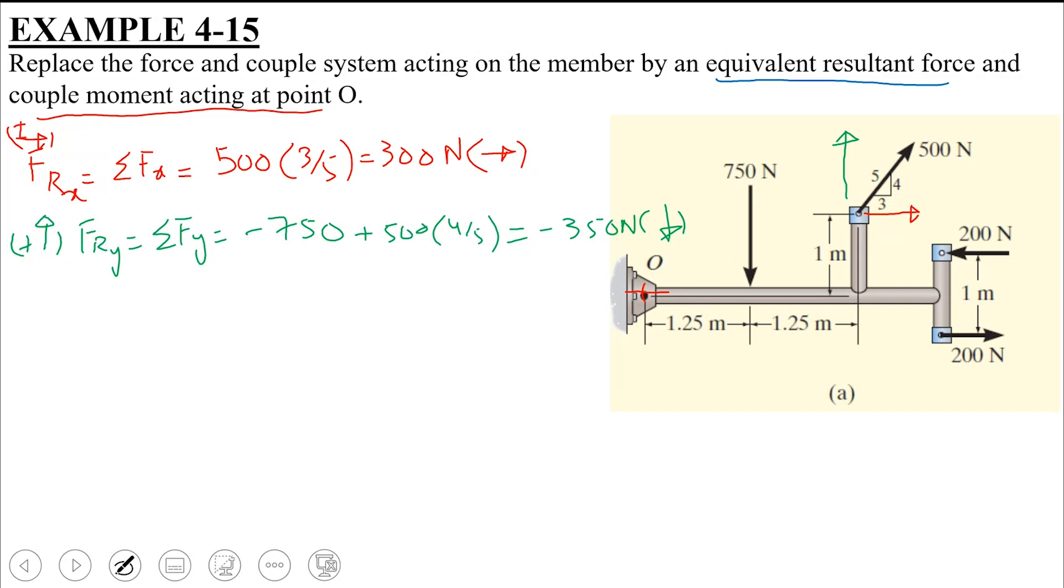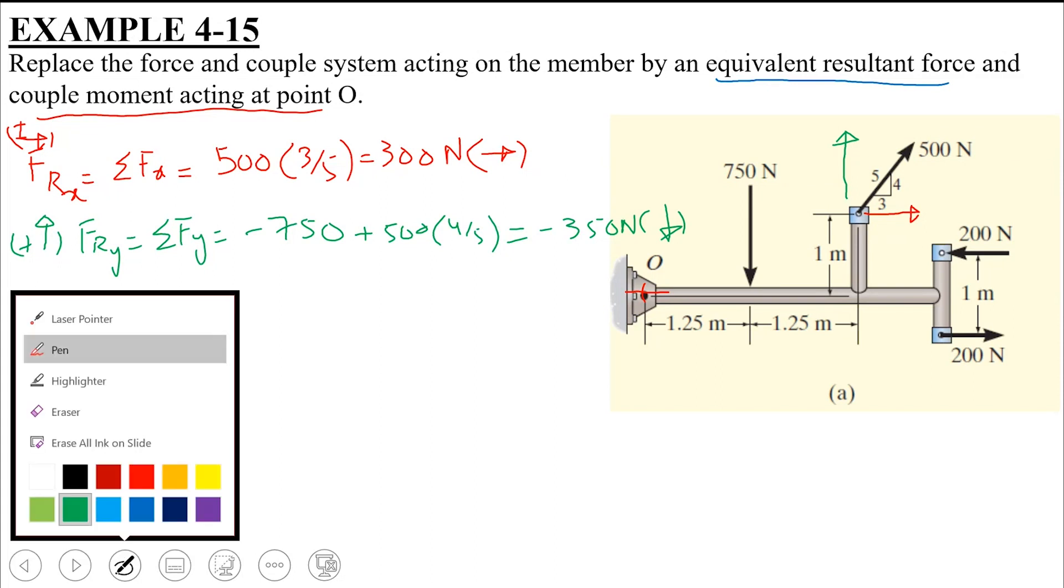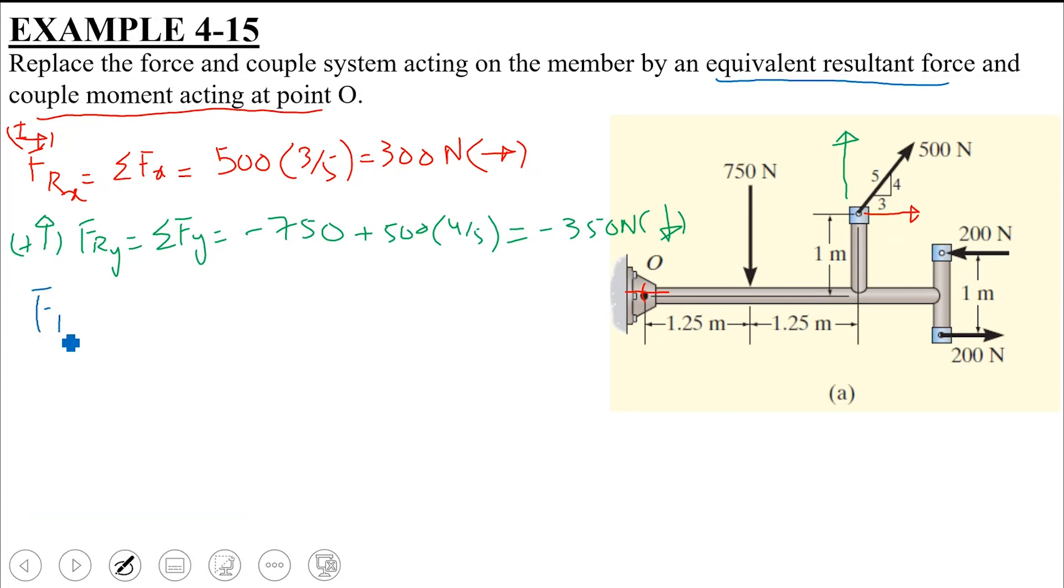Now, what is going to be the value of FR? The magnitude of resultant force FR, what is this? Sir, this is 460.97. So FRx square plus FRy square whole under roots. You will find out this magnitude which comes out to be 460.9 N. This will be the resultant force FR.